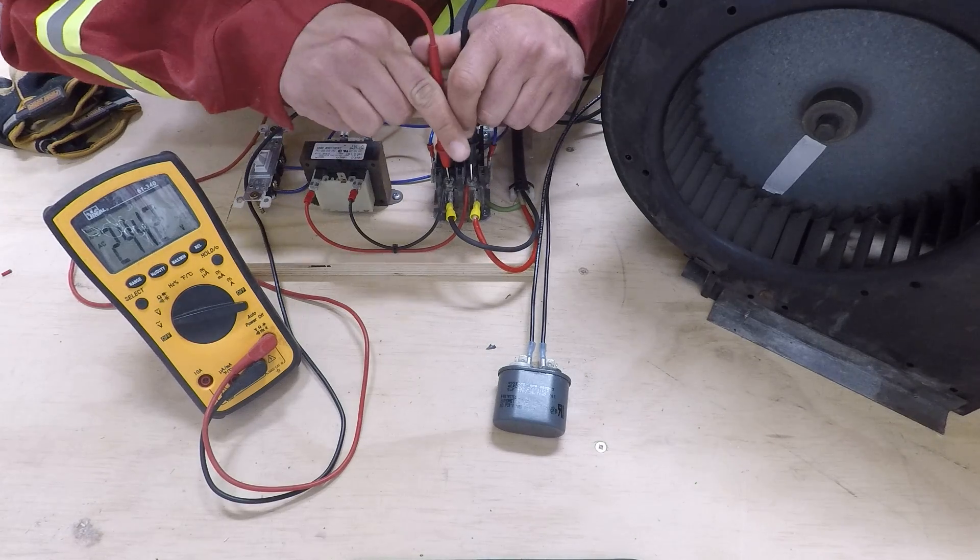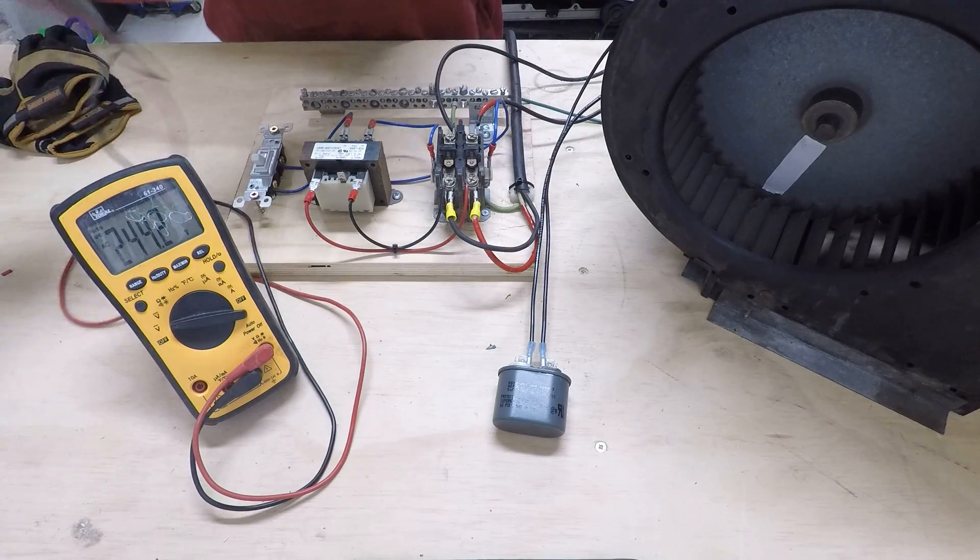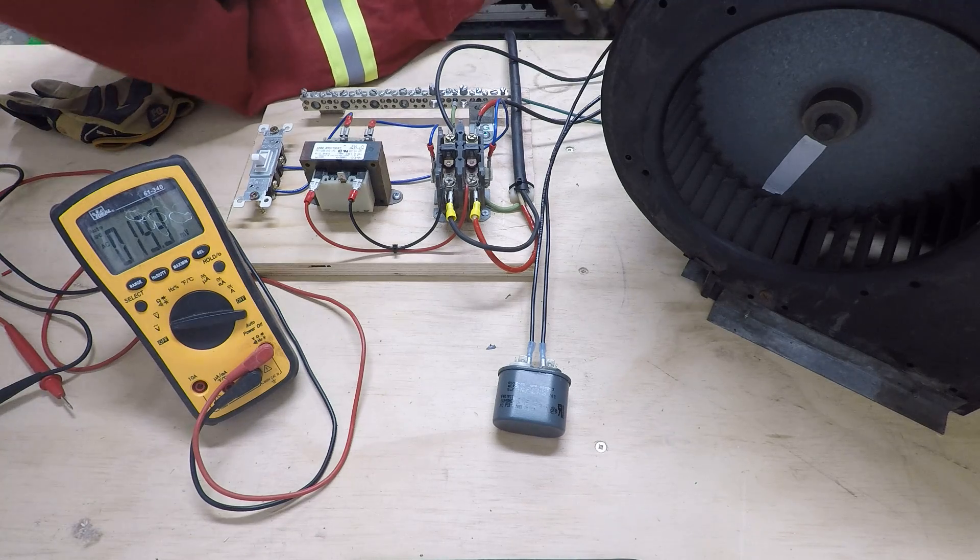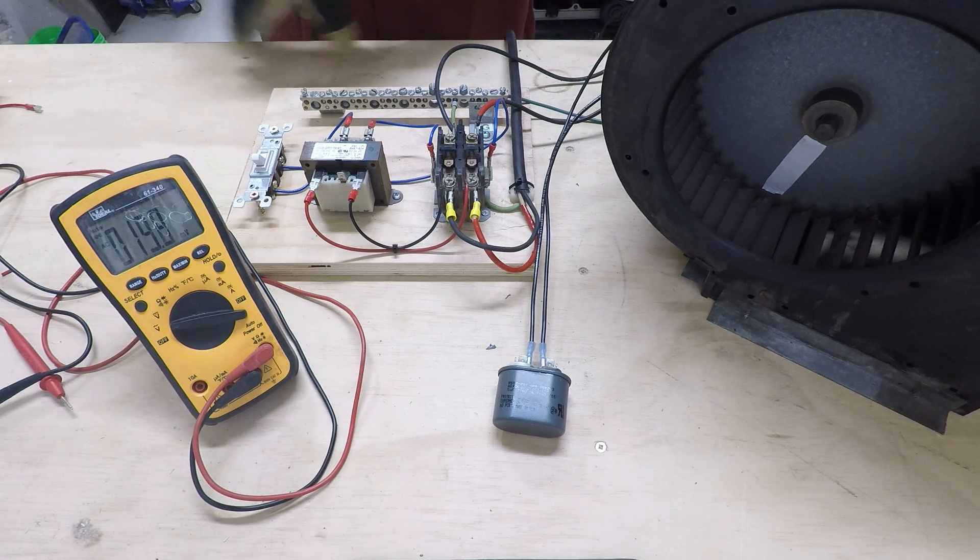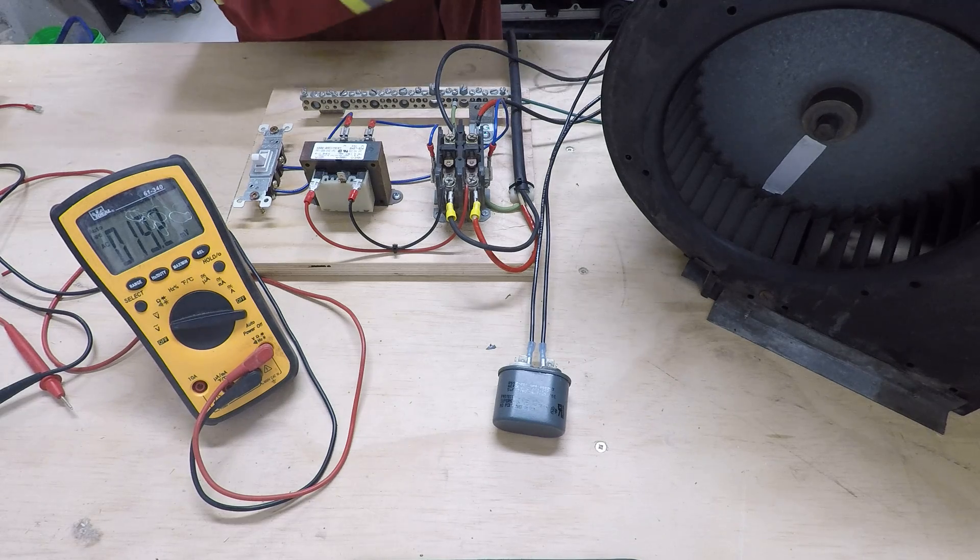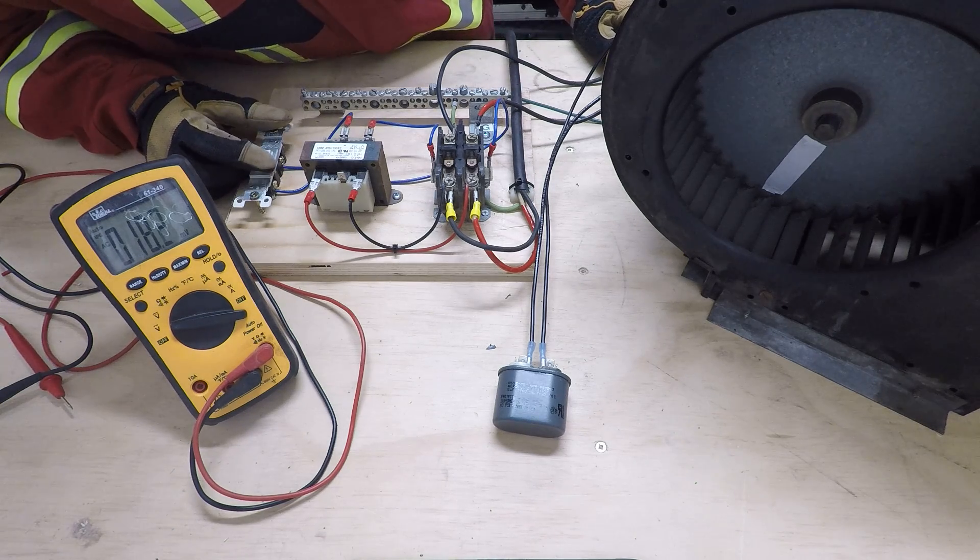I'll put this on volts AC and confirm that we have 240 volts power coming into the system. Looks like we got 244, so that's perfect. I'm putting some gloves on here because I'm going to be working with the fan to slow it down a bit once we turn it on. First, let's confirm that this motor works. We've got the capacitor in the circuit, we've got power.